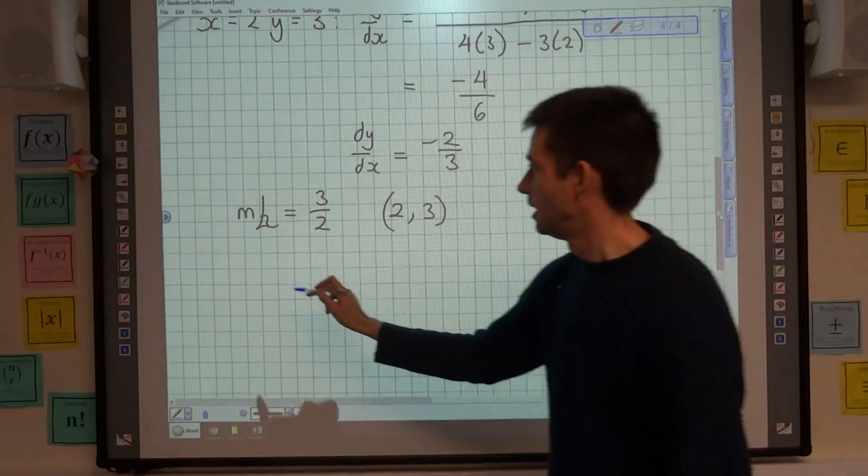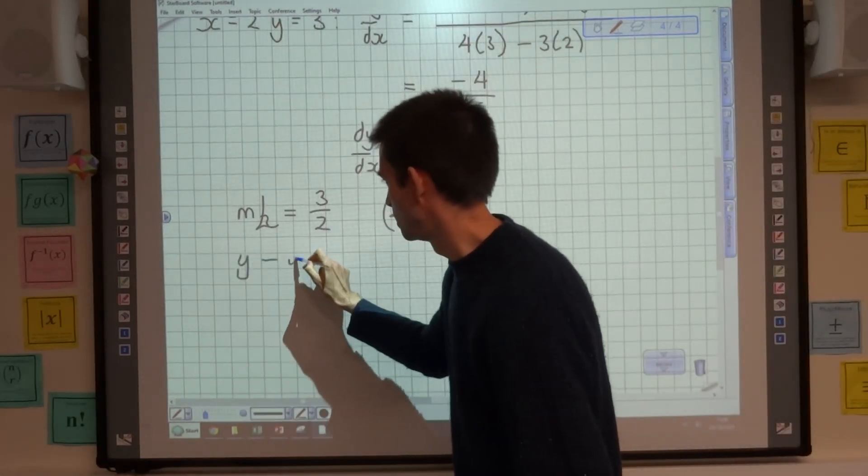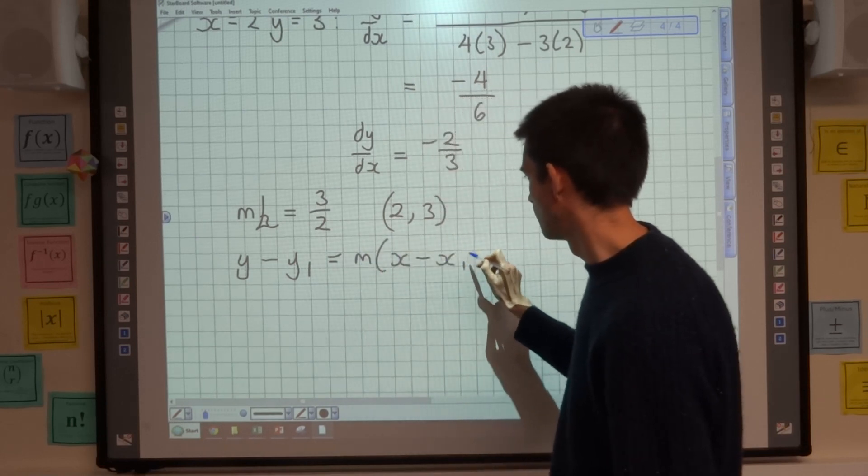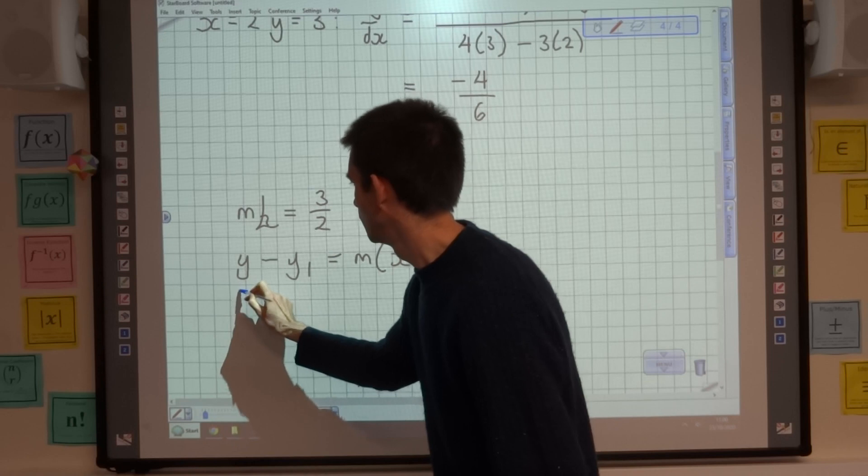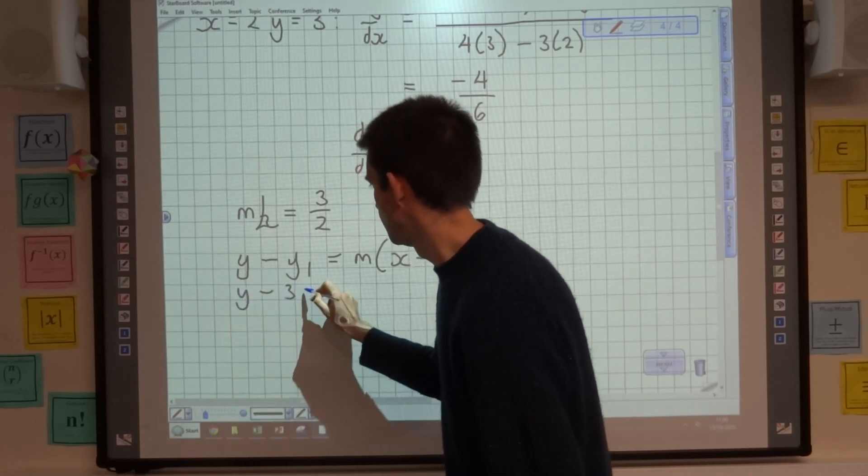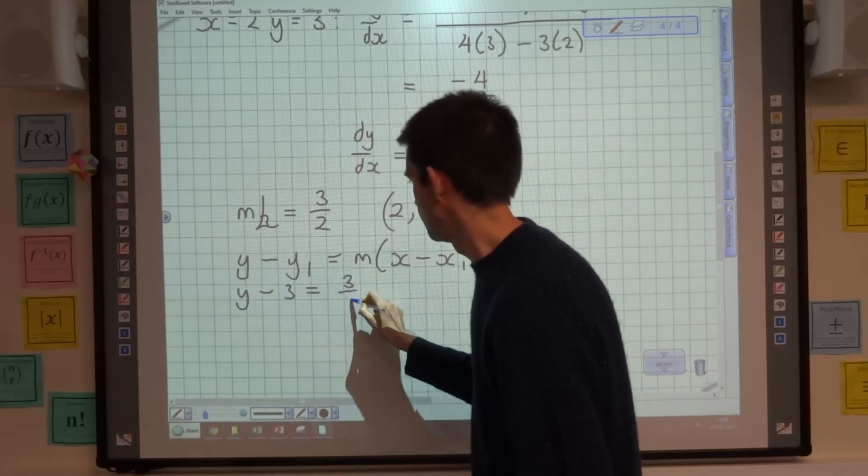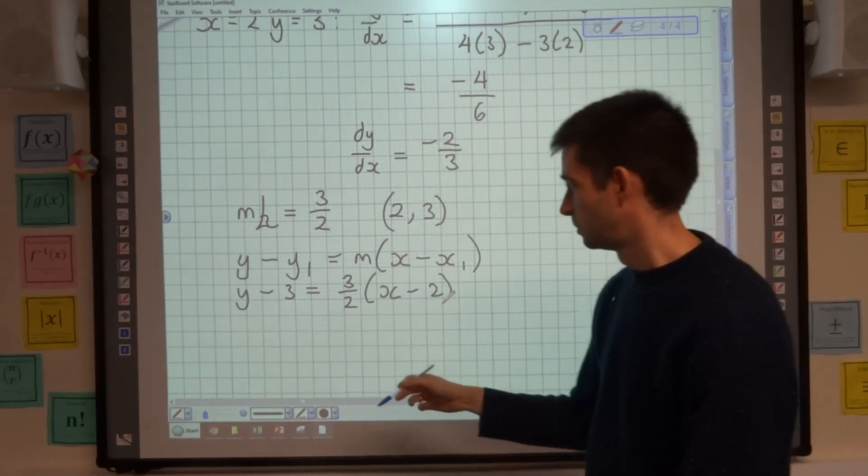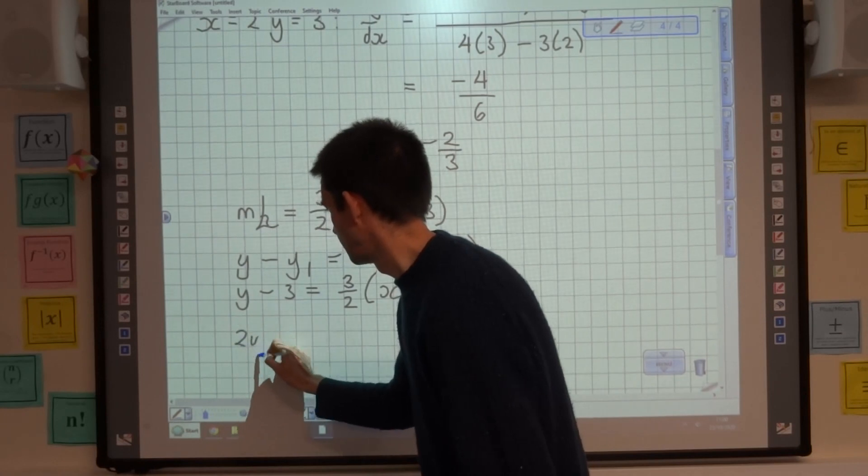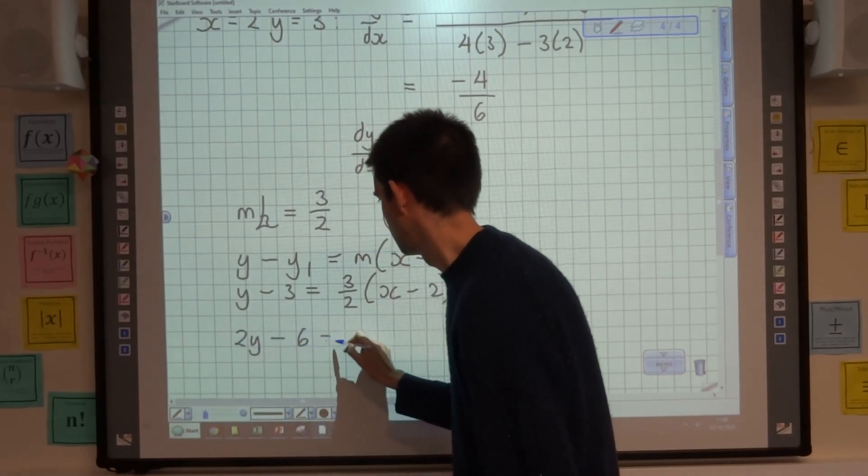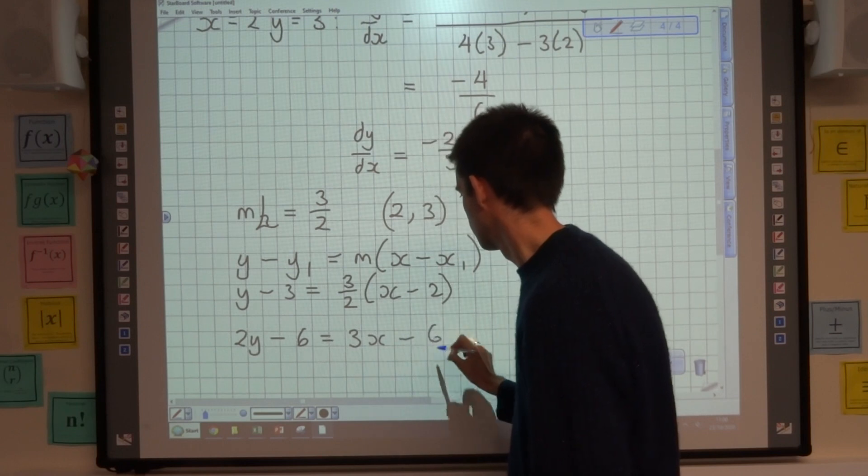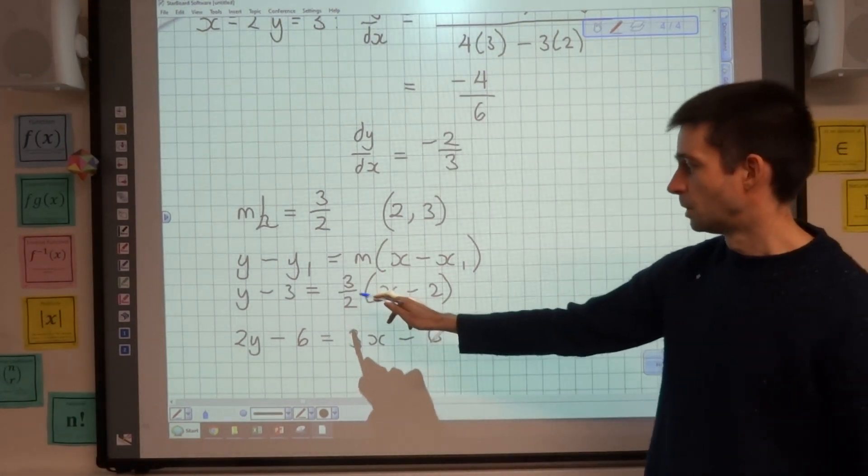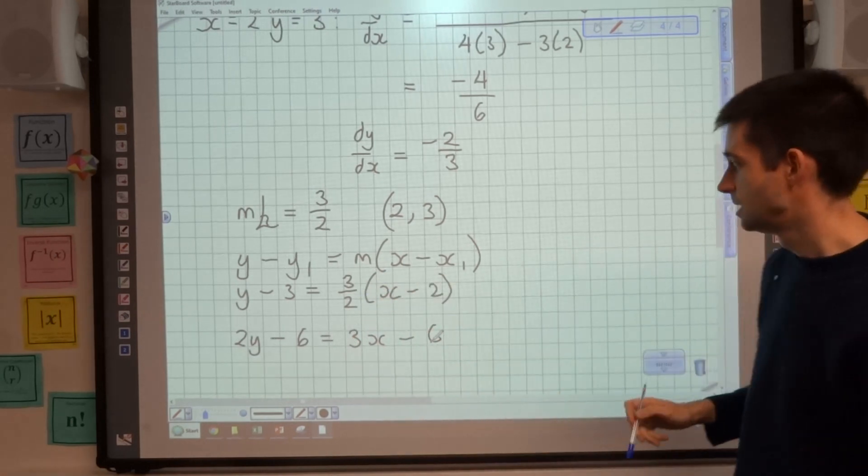Then all that remains to be done is to crack out the general equation of a straight line: y - y₁ = m(x - x₁). So, y - 3 is going to equal 3/2(x - 2). Multiplying through by 2, I'm going to get 2y - 6 = 3x - 6.